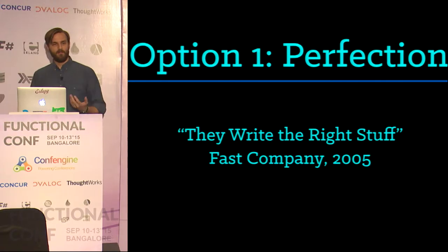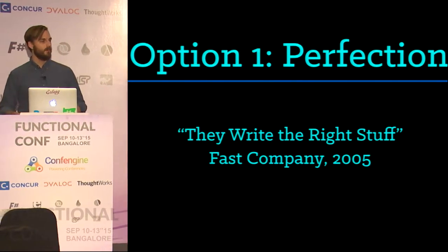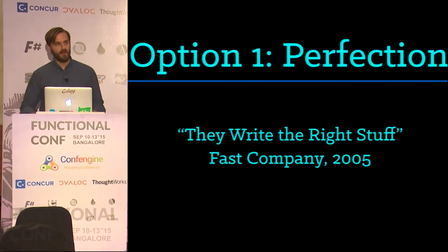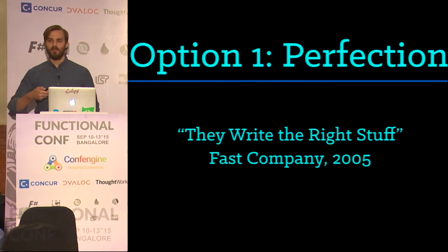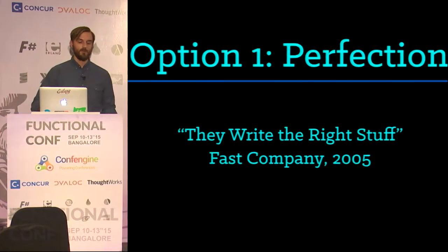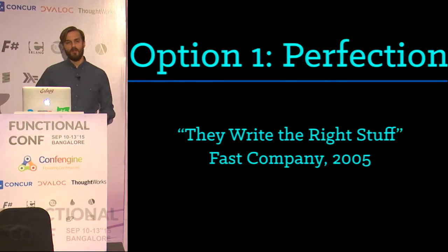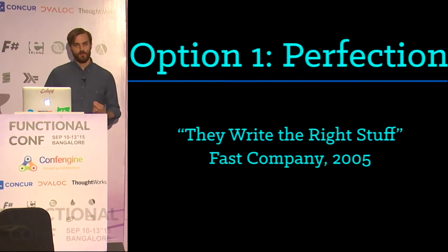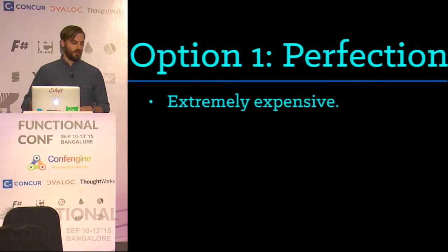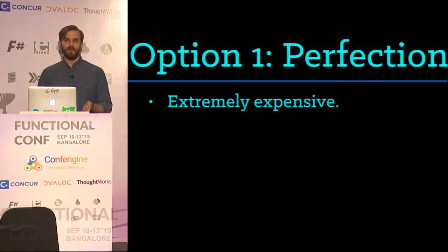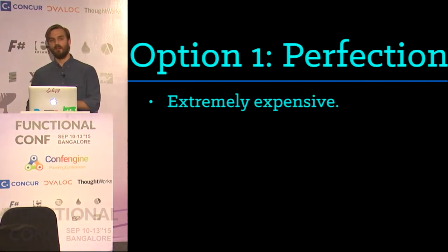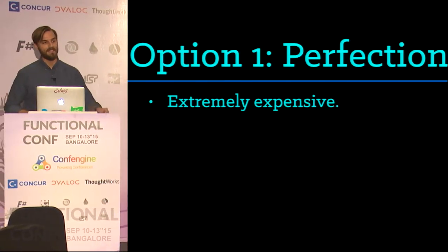There's an article called "The Right Stuff" in Fast Company 2005 that talked about this particular software group. It was a very interesting article about the nature of the software group — even though I'm a software engineer, it was a completely alien environment to me. The sort of defects with trying to achieve perfection is that it's extremely expensive — per line of code in the Space Shuttle flight control system, it cost $150,000 US dollars per a single line of code, and there were millions of lines of code in this thing.